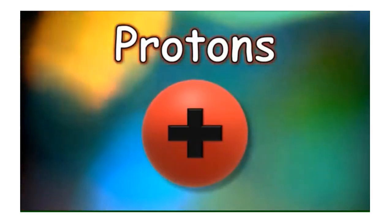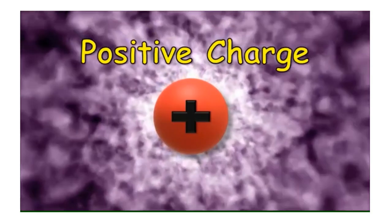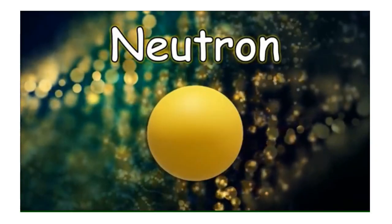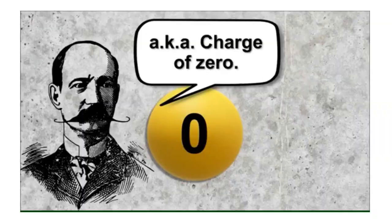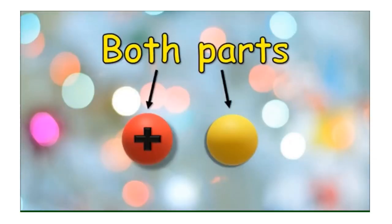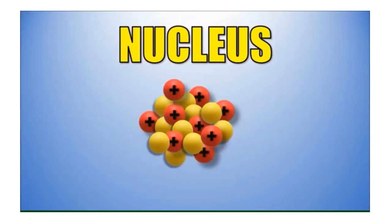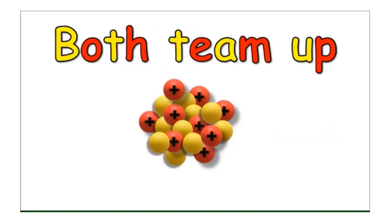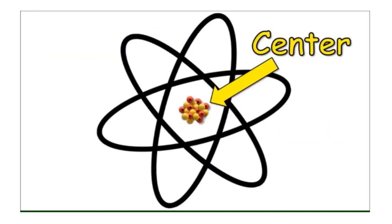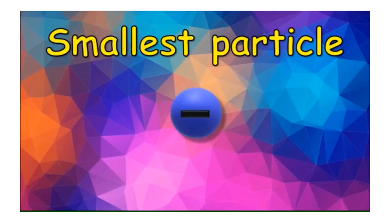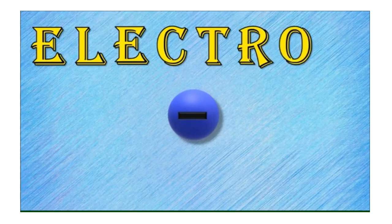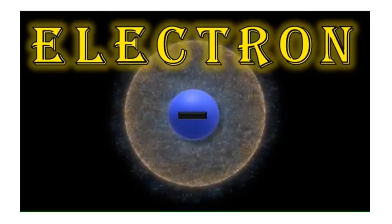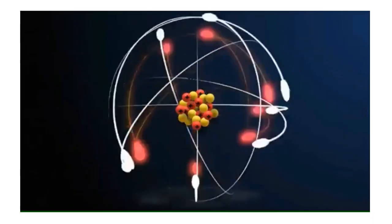So let's talk about protons first — they have a positive charge, like an energy burst. The second part is the neutron; it has a neutral chunk, a.k.a. a charge of zero. Now both parts hang out in a place called the nucleus. Protons and neutrons both team up to make the center of the atom — the nucleus. And now we can't forget the third part: it's the smallest particle with the negative charge, called E-L-E-C-T-R-O-N. Electrons spin around the nucleus of the atom.